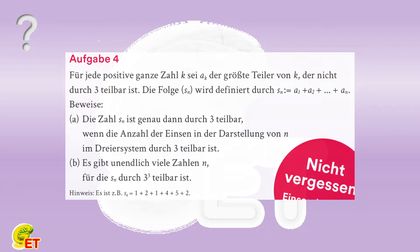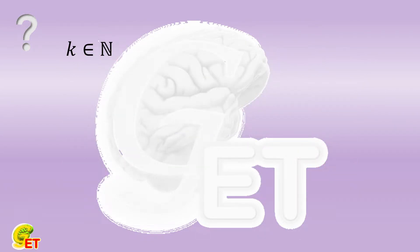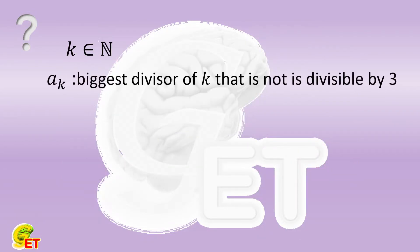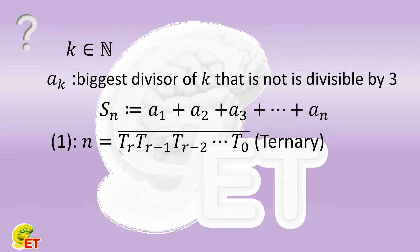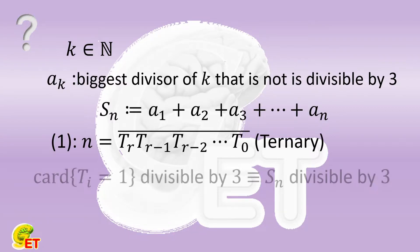For any natural number k, we denote its largest divisor that is not divisible by 3 as a(k), and denote the summation of a(1) to a(n) as S(n). There are two conclusions required to be proved in this task. First, if n is written as a ternary number, it is equivalent that the amount of digits equal to 1 in the ternary number being divisible by 3, and S(n) being divisible by 3.